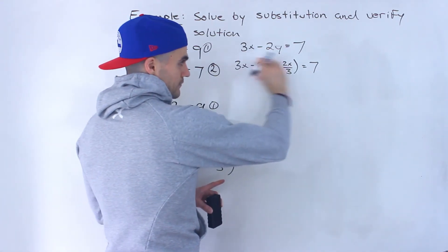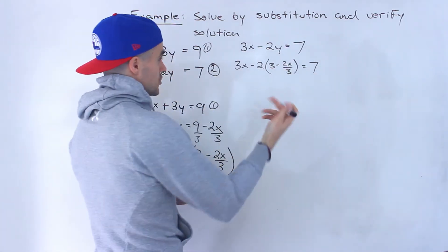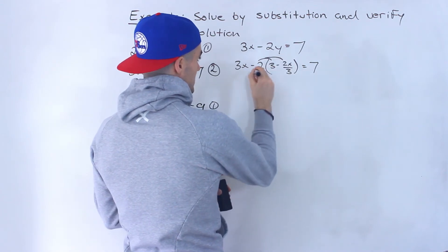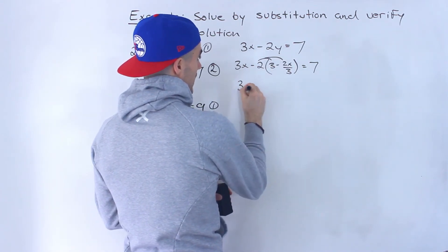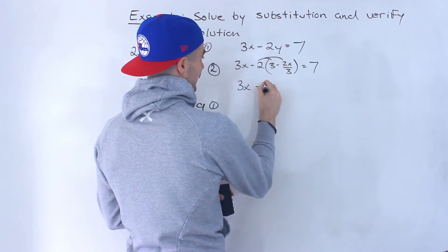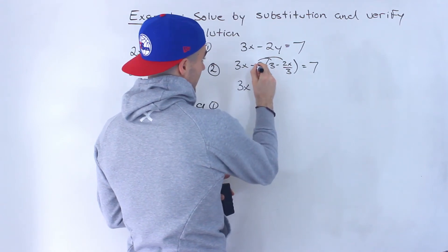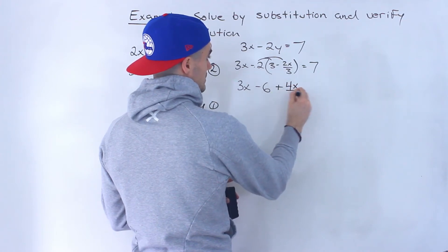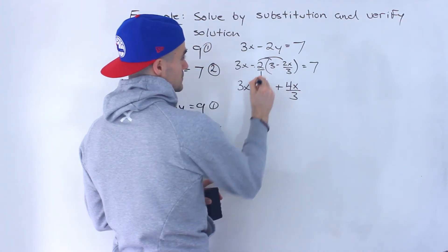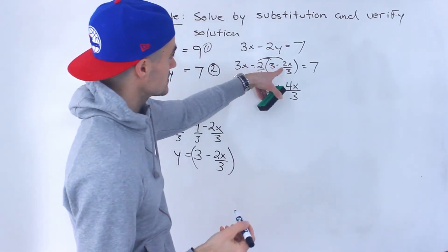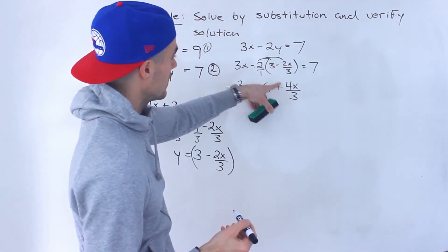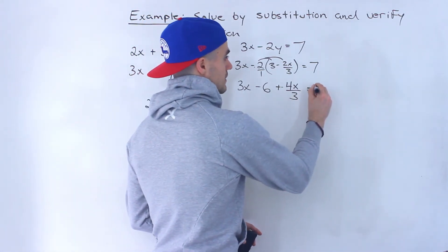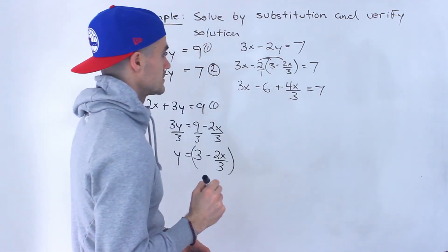And now we have an equation in terms of one variable, in terms of the x. So to solve for the x, what I'm going to do, distribute this negative 2 inside the bracket. So we'll have 3x, negative 2 times 3 gives us negative 6. And then negative 2 times negative 2x gives us positive 4x. And that's still going to be over 3, because this negative 2 is like over 1. So negative 2 times negative 2x gives us positive 4x. 1 times 3 gives us 3. And then this here is still going to be 7.